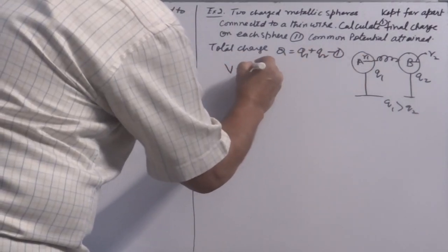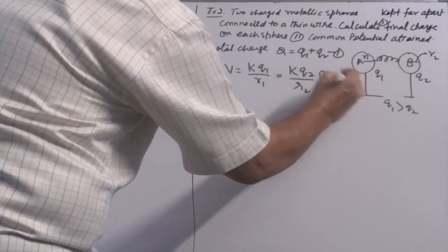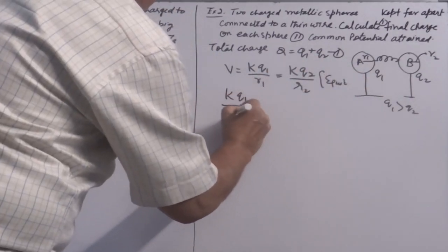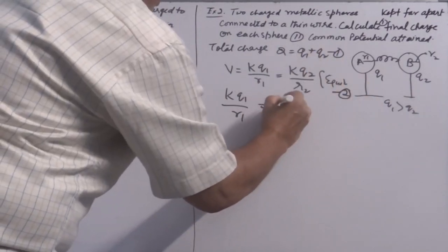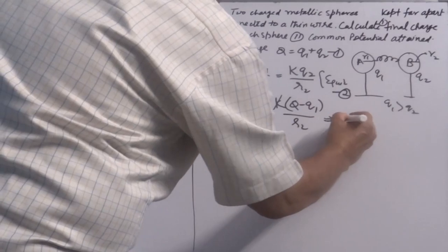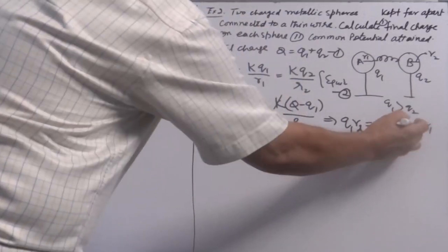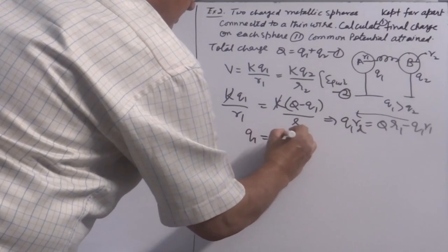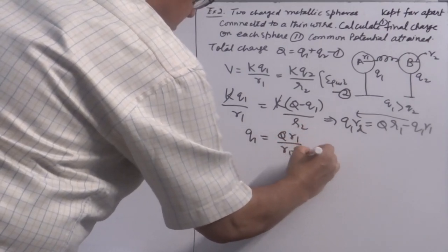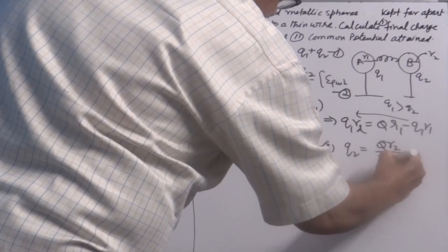The common potential condition gives KQ1/R1 = K(Q - Q1)/R2. Cancelling K and cross-multiplying: Q1·R2 = (Q - Q1)·R1, so Q1 = Q·R1/(R1 + R2). Similarly, Q2 = Q·R2/(R1 + R2).